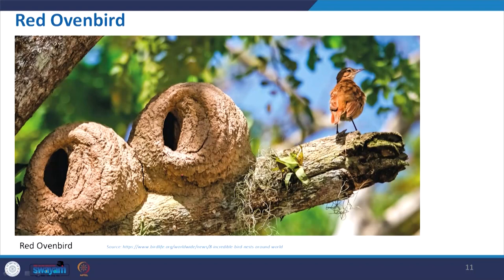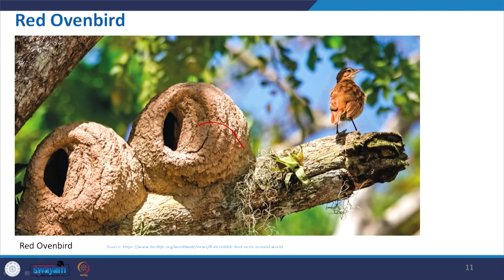This is a closer picture of the same nest — you can see how stable and strong it is. It is made on a branch giving a base, and earlier it was on a post. Depending on availability, in urban areas where trees are less available, they build on some abandoned structure where there is minimal reach by people.